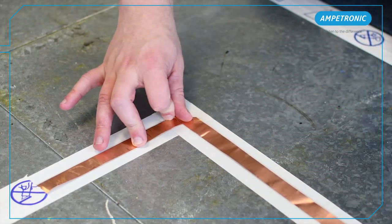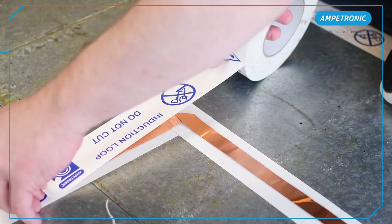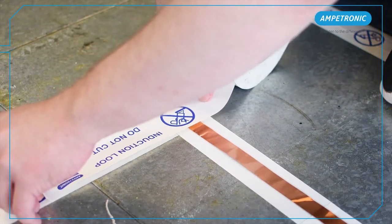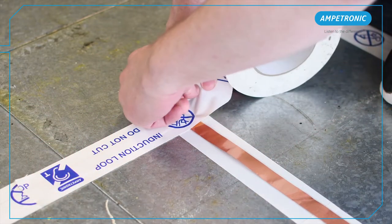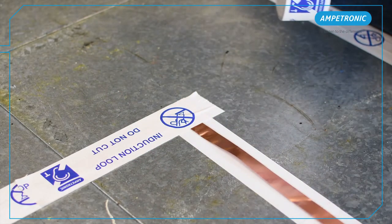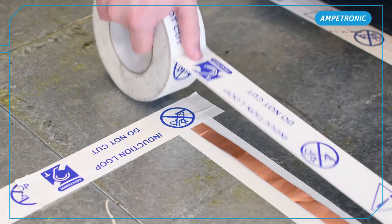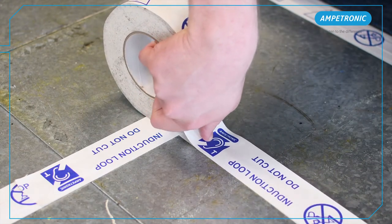Printed warning tape is applied to the top of the flat copper tape in order to hold the tape in place, provide some additional protection, and serve as a visual reminder to carpet fitters not to cut the tape. When applying printed warning tape, try to avoid overlapping layers of tape which could cause bumps under the floor finish.